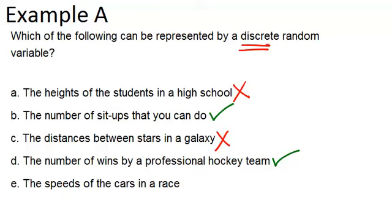And the speeds of the cars in a race. That wouldn't be discrete because just like distances or heights, there's an infinite number of speeds. That's a continuous variable. It's not discrete. So, therefore, it's not a discrete random variable.